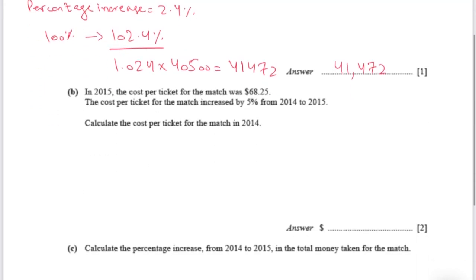The next part says: in 2015, the cost per ticket for the match was $68.25. The cost per ticket for the match increased by 5% from 2014 to 2015. Calculate the cost per ticket for the match in 2014.